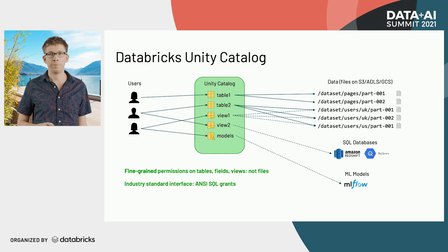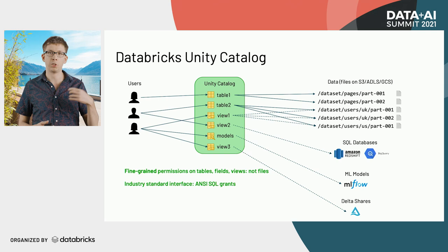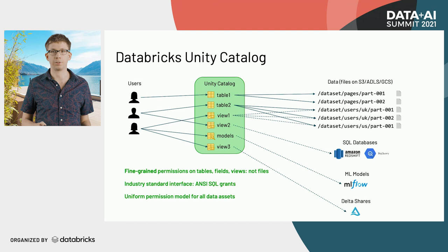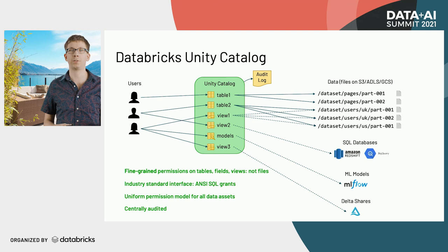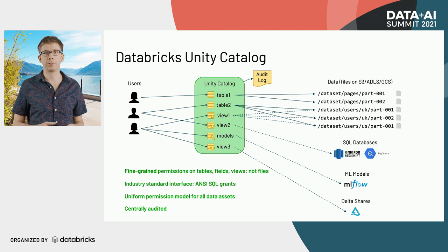And of course, with delta sharing, we are also giving you the same interface to manage data that's been shared with you and figure out who in your organization has access to these shares. So you get one unified governance model for all these types of data assets. All accesses to these objects have to pass through the Unity Catalog, so we have a central place to audit all the accesses. You get a detailed audit log of what everyone is accessing, and you can much more easily implement compliance best practices through that as well.